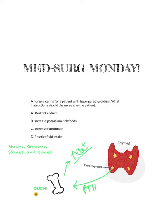Another thing we can see with increased calcium is increased calcium in the kidneys, which is going to end up forming stones. So if we go back to our question, we can look at restricting sodium. We know sodium doesn't have anything to do with hyperparathyroidism, and neither does potassium, so we can get rid of those two.